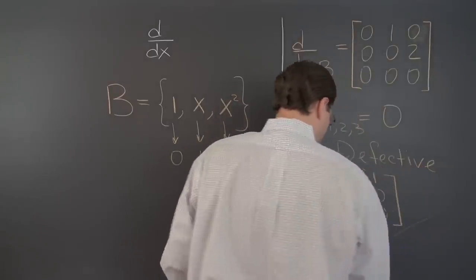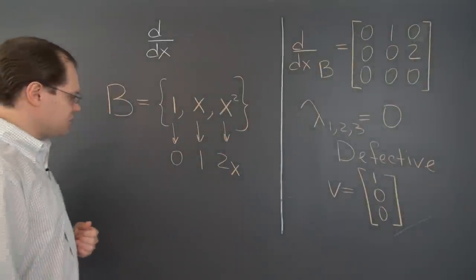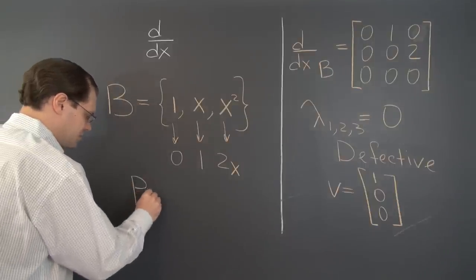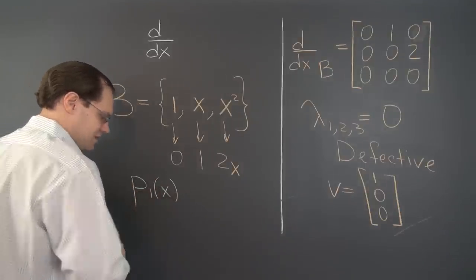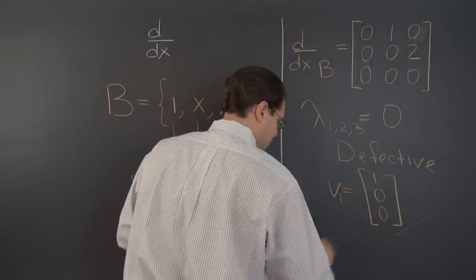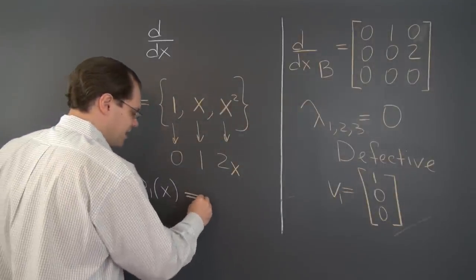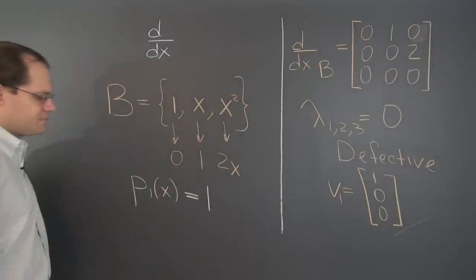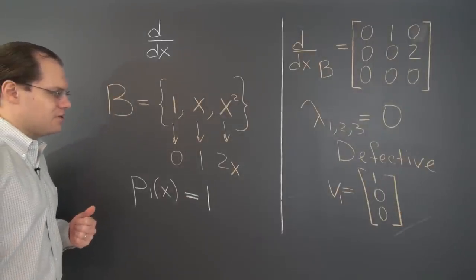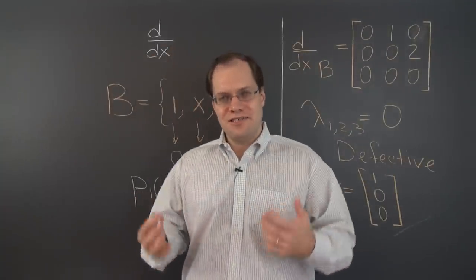And these are the components of the only eigenfunction of this transformation, which of course is P1 of x. So let's call this V1, the only eigenvector. And the only corresponding eigenfunction is one. And the rest are not available. So this transformation is defective.